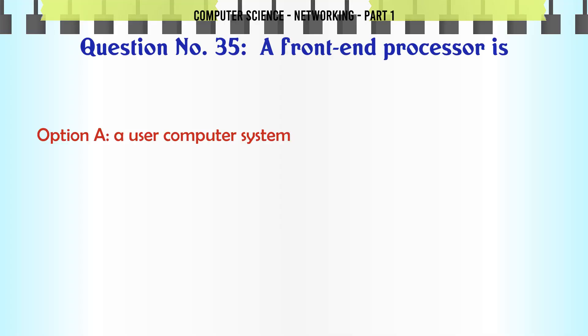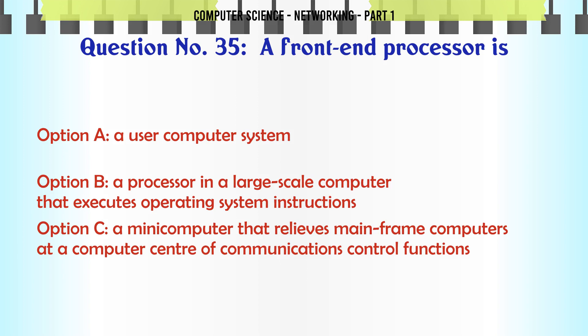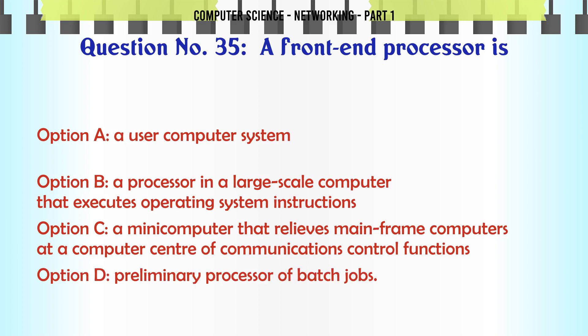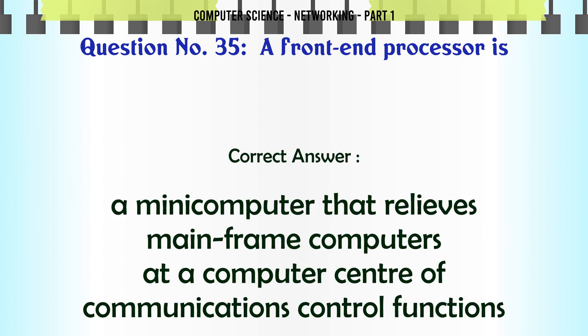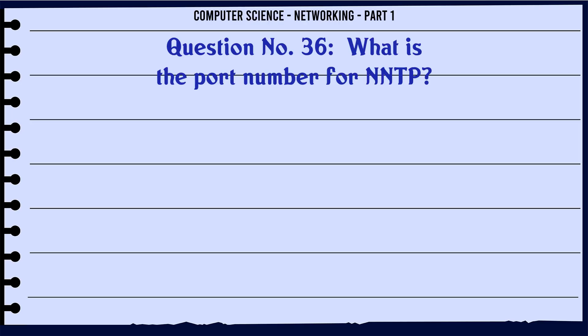A front end processor is: A. A user computer system. B. A processor in a large scale computer that executes operating system instructions. C. A mini computer that relieves mainframe computers at a computer center of communications control functions. D. Preliminary processor of batch jobs. The correct answer is: A mini computer that relieves mainframe computers at a computer center of communications control functions.